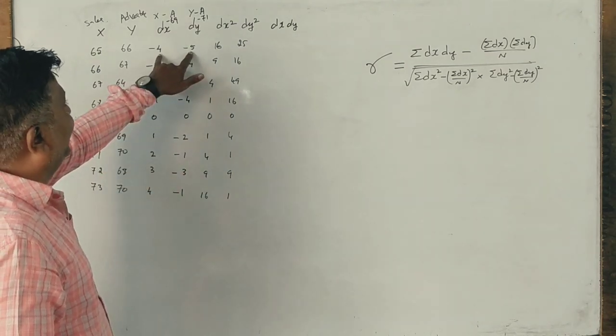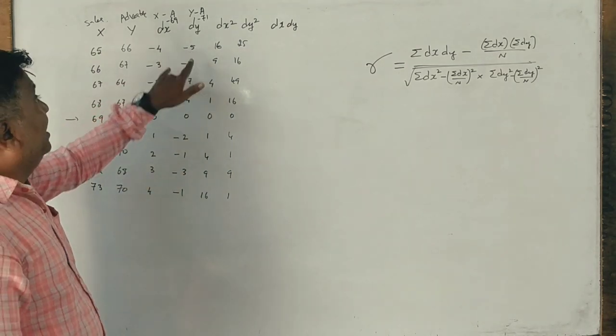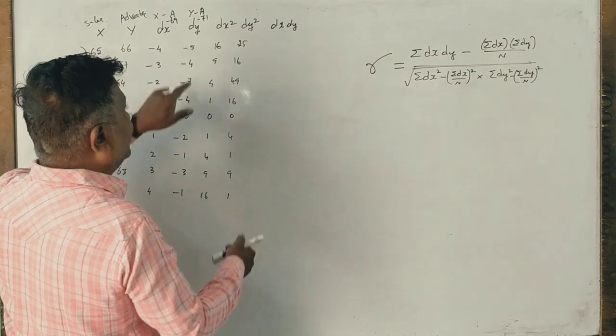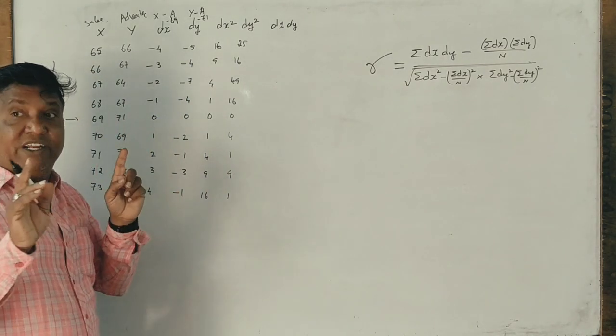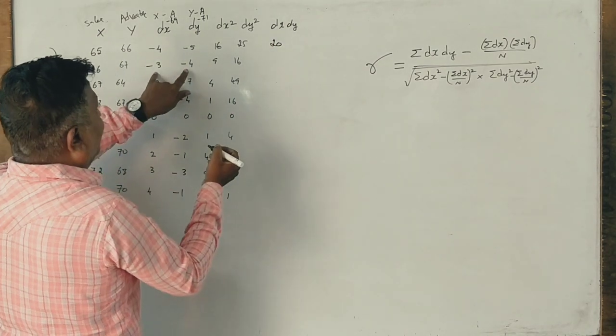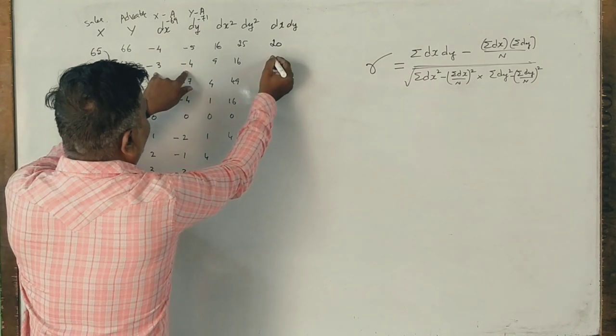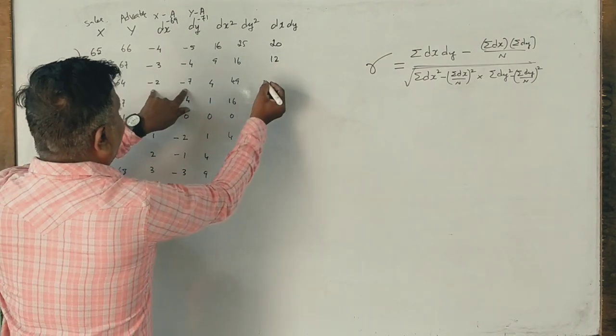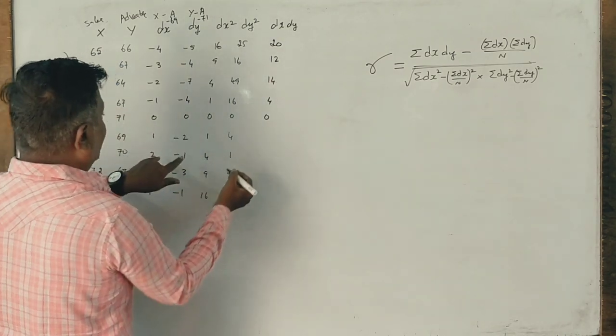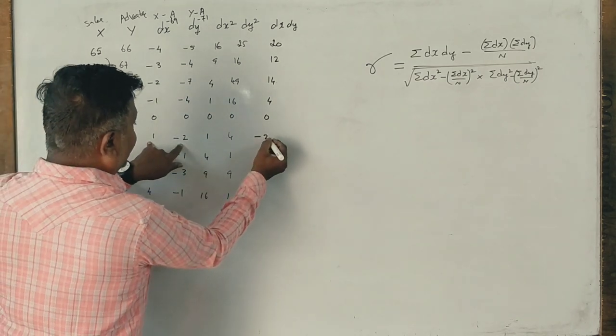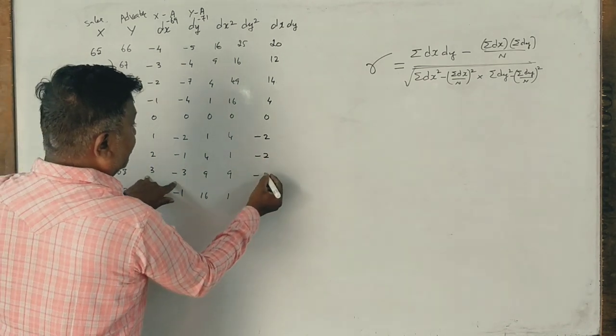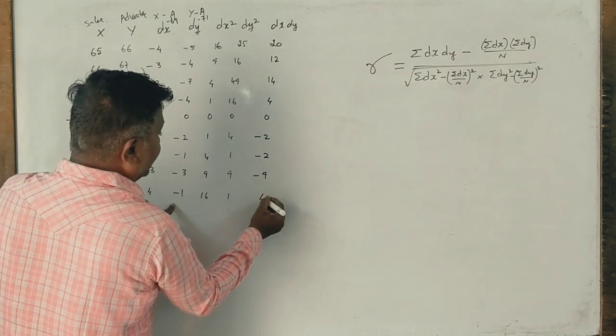dx into dy is very important. That is first minus to minus plus 7. Minus to minus is plus 4, 5 is 20, 25. Minus to minus plus 4, 4, 4, 3 is 12. Minus to minus plus 7, 2 is 14. Minus to minus is plus 4 and 0. Plus to minus is minus, minus to minus 2. Plus into minus, minus to minus 9. Plus into minus, 4 ones are 4 minus.